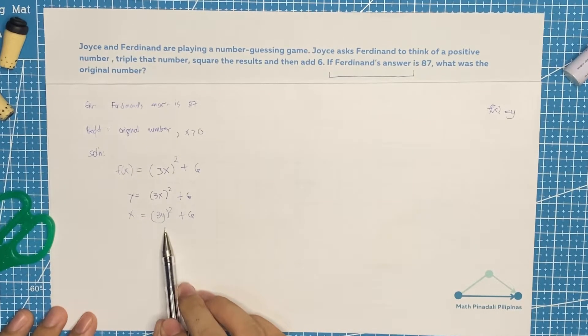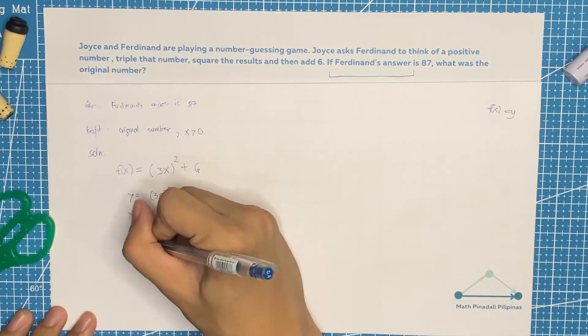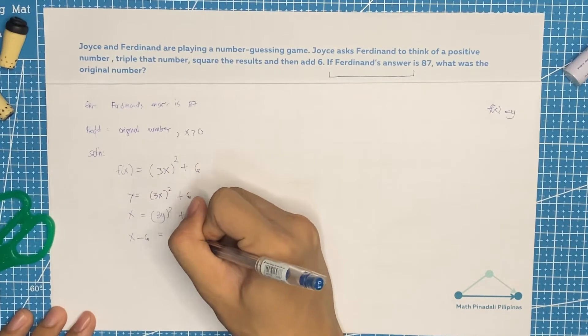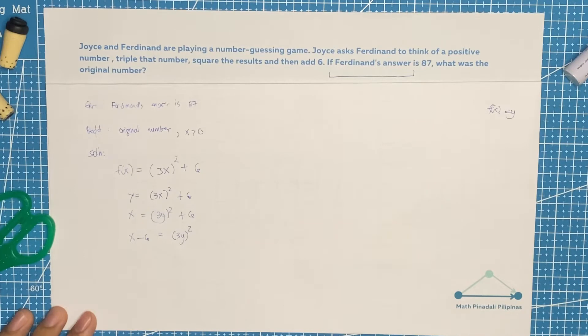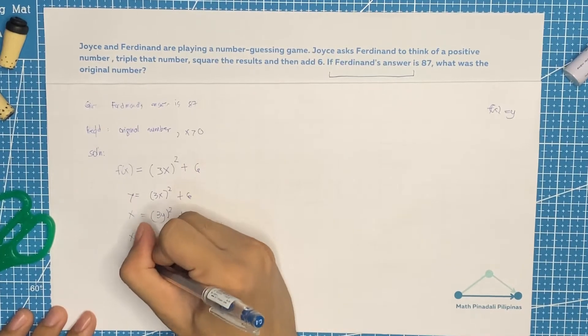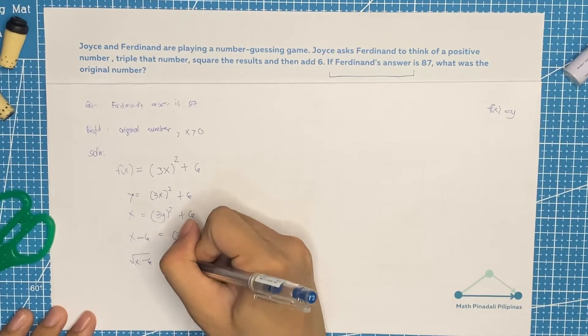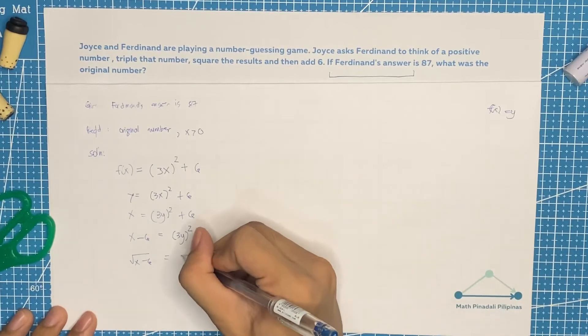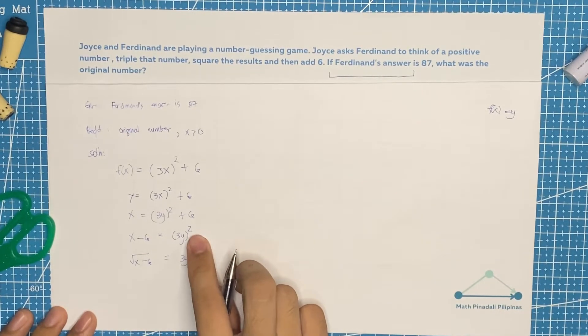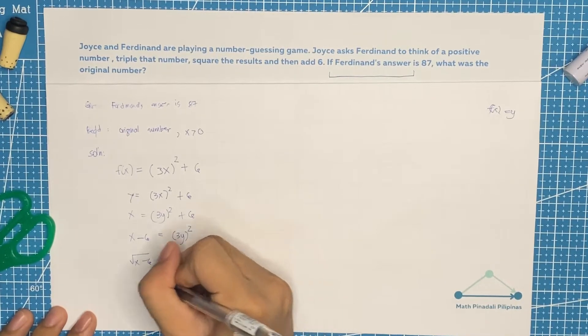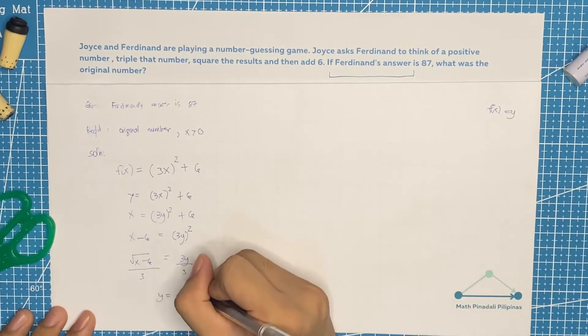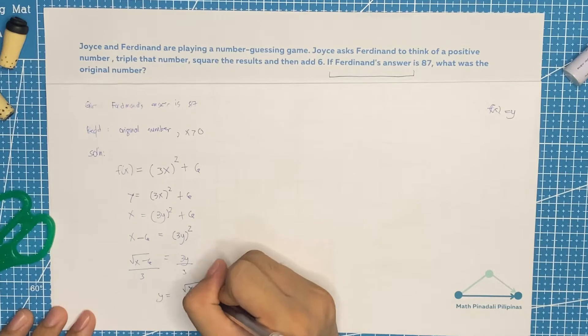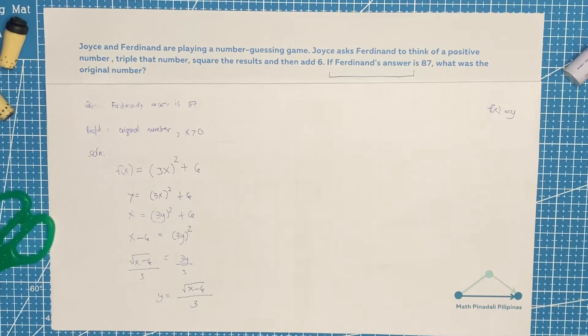Now solve for y. Let's move the 6 to the other side, that would be x minus 6 equals 3y squared. Take the square root. So that would be square root of x minus 6 equals 3y since the square is removed. Divide both sides by 3. That would be y equals square root of x minus 6 all over 3.